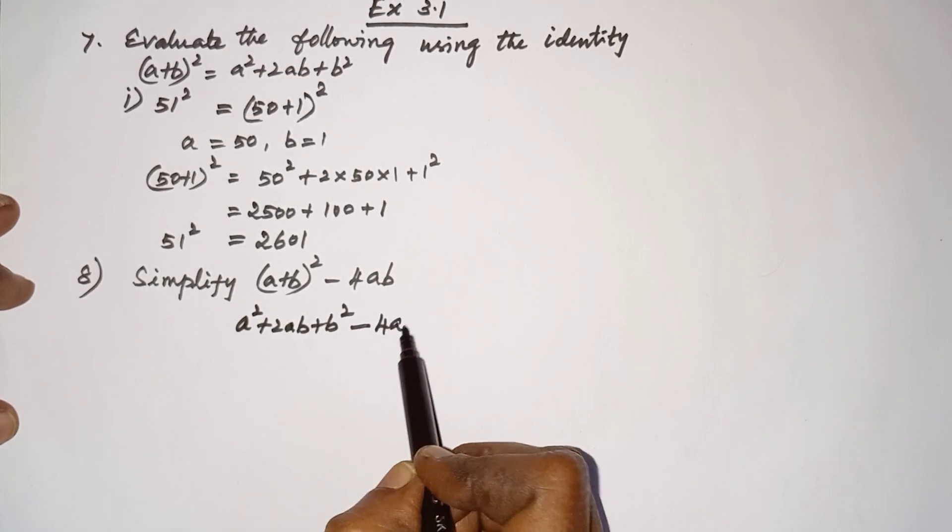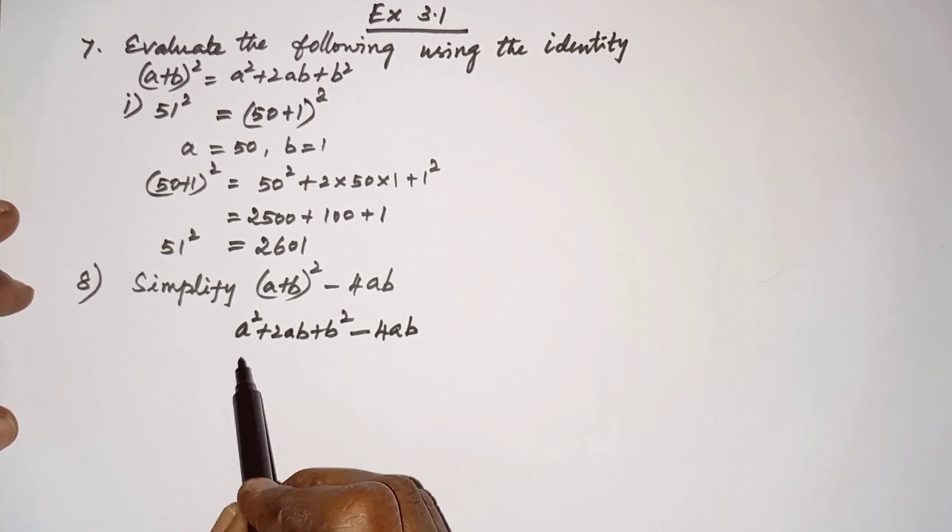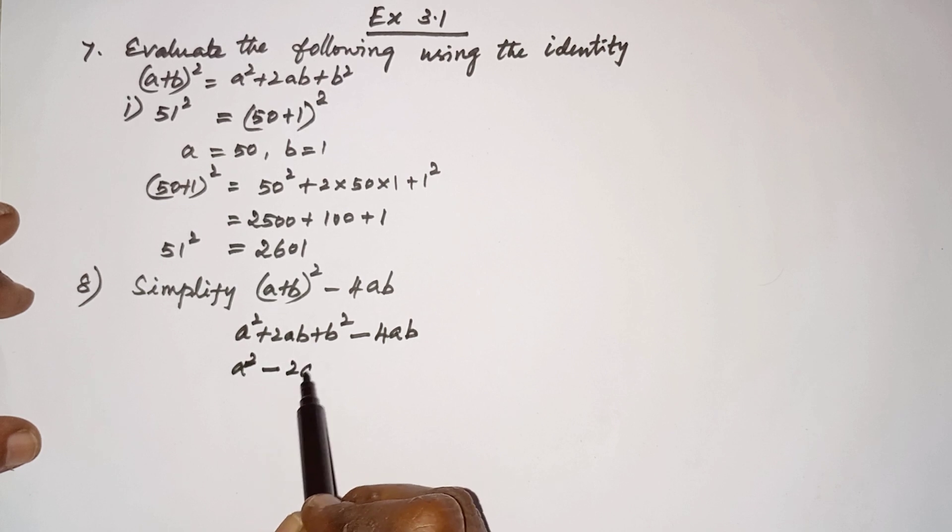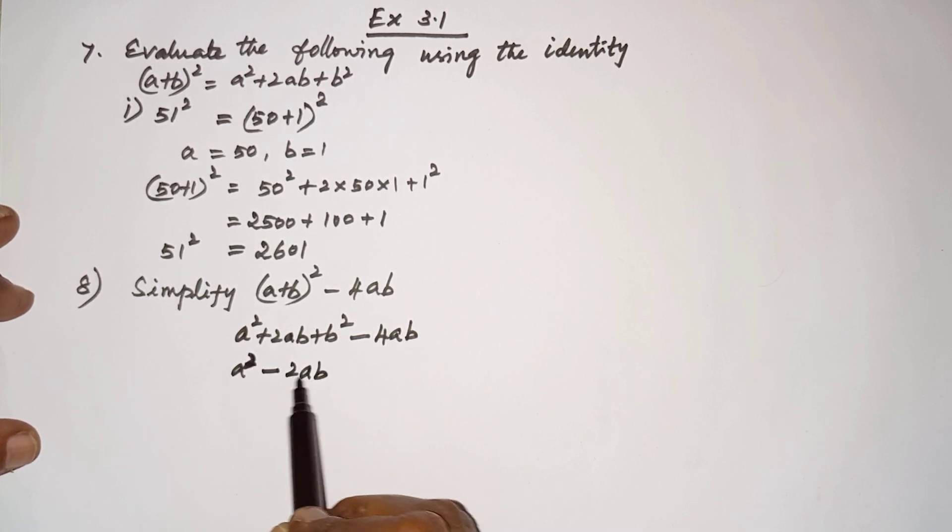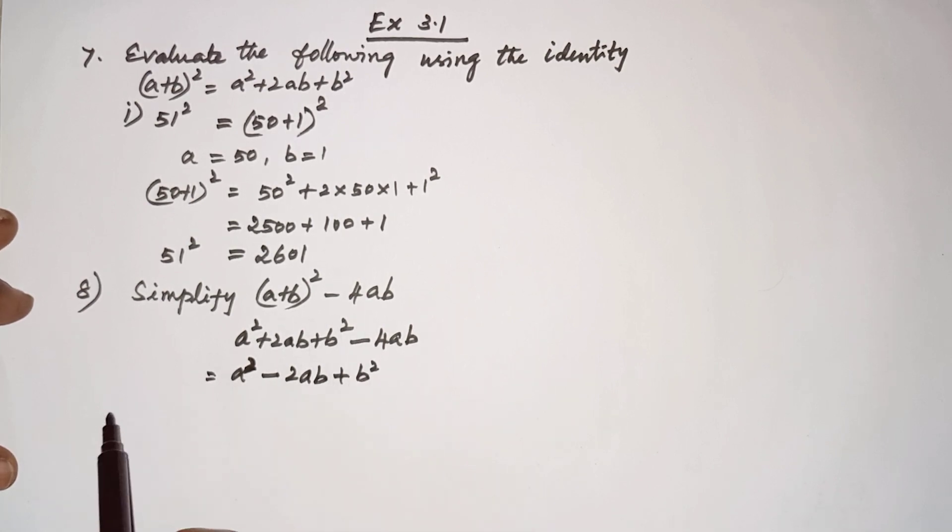write again 4ab. Here plus 2ab and minus 4ab we can add, so we will be getting a² - 2ab + b². So this is the answer for the eighth one.